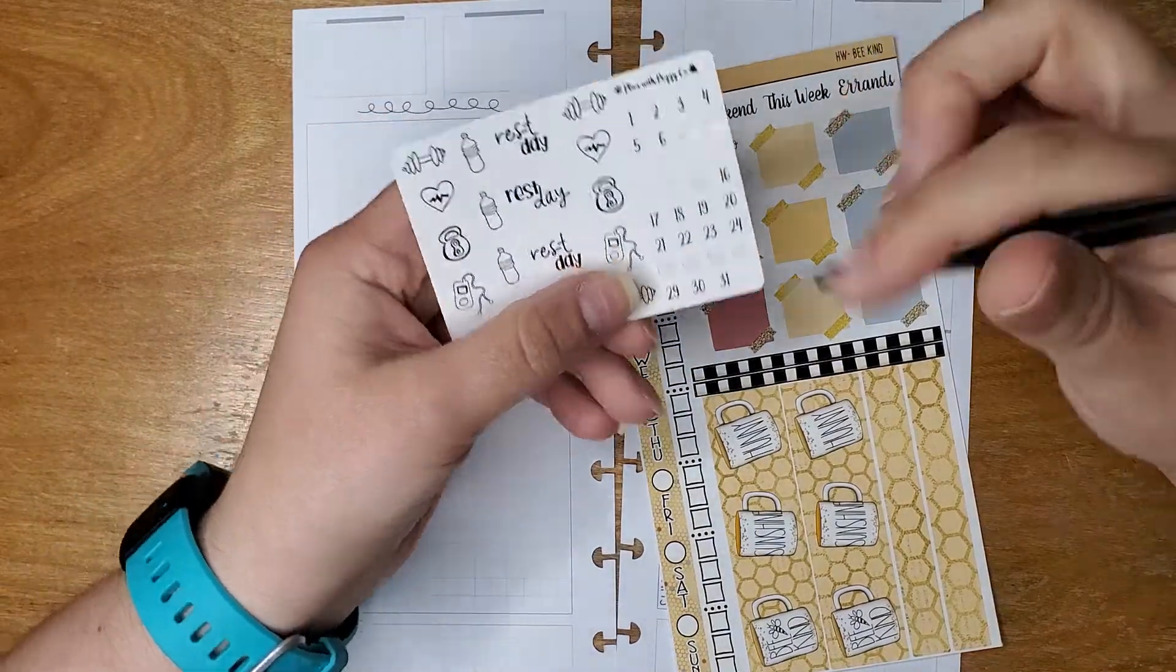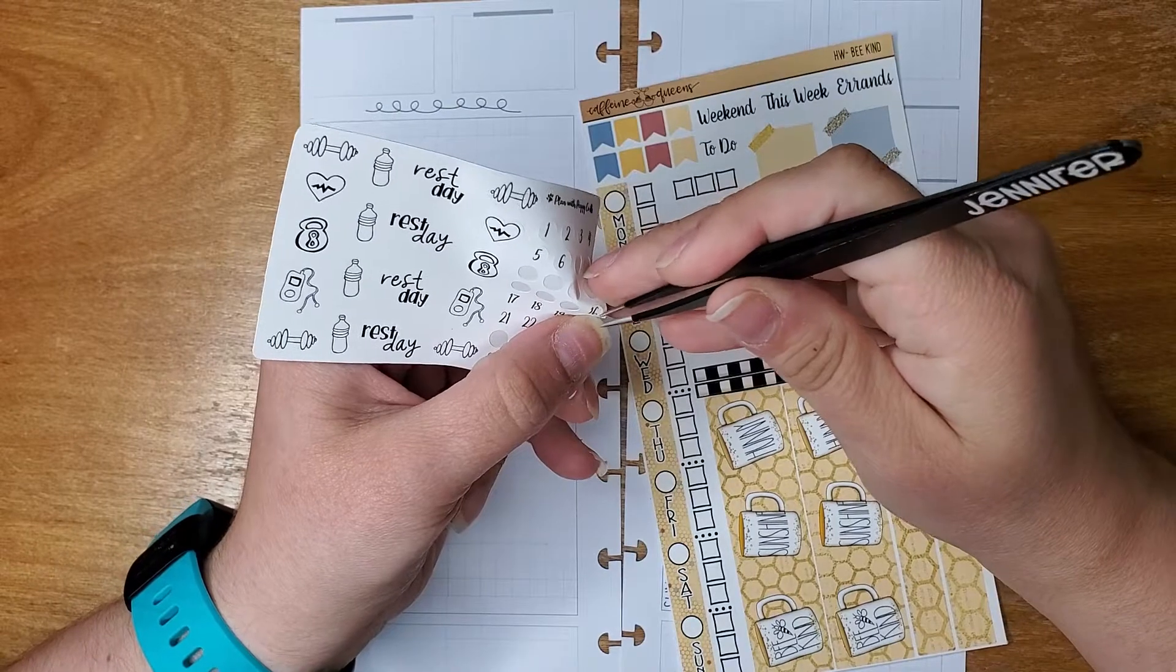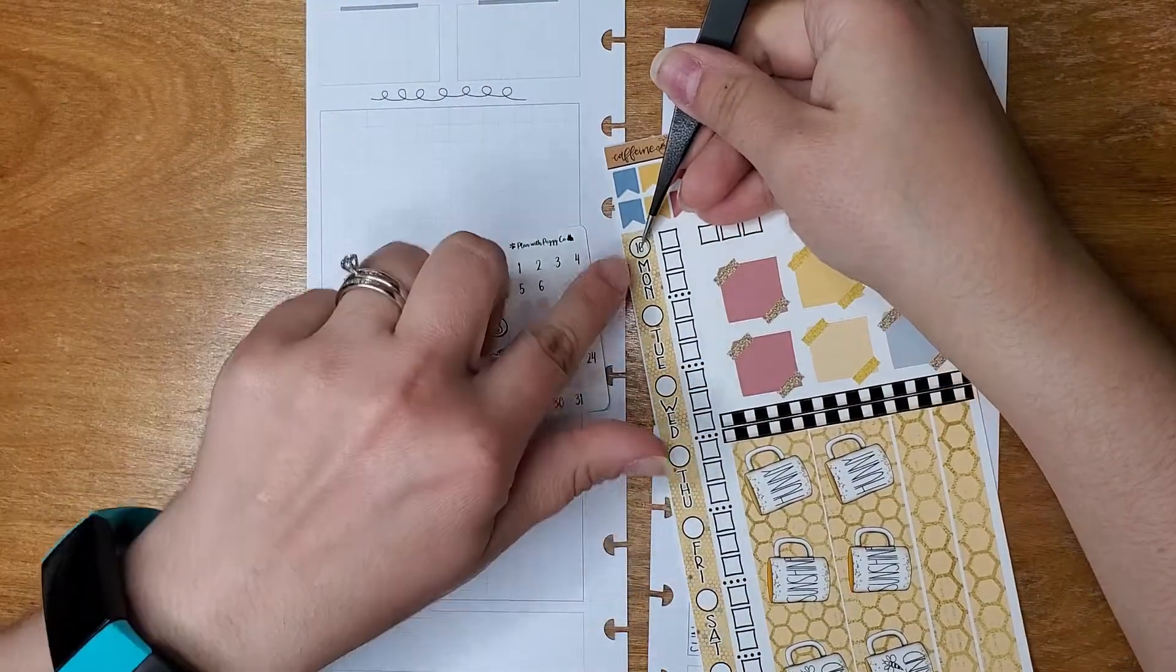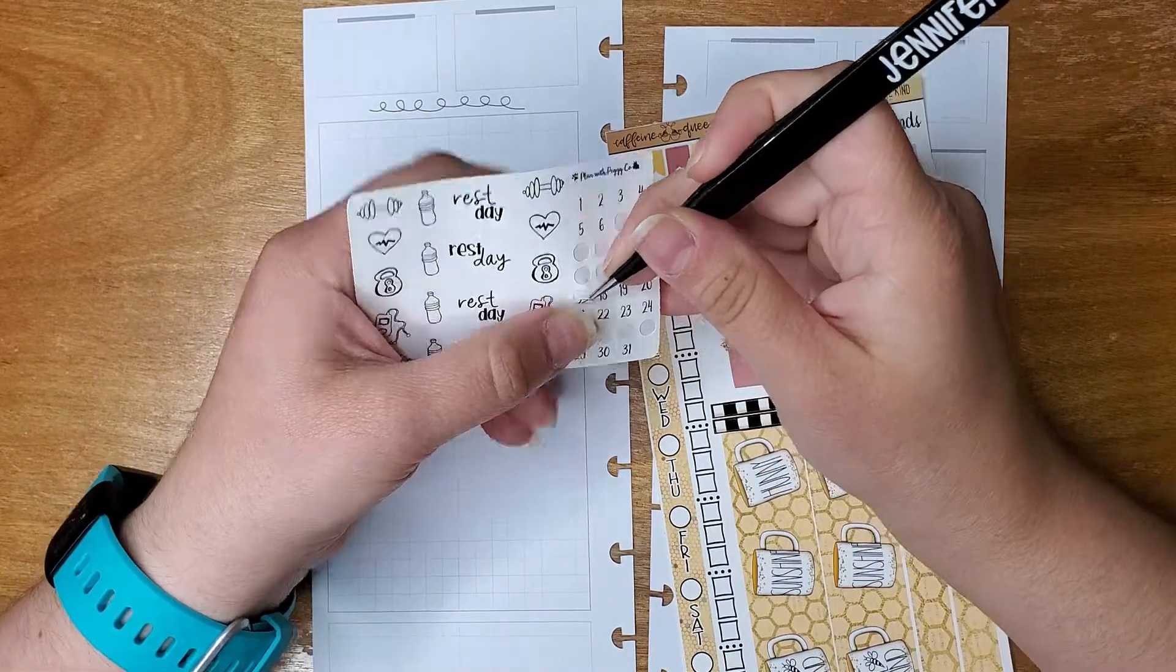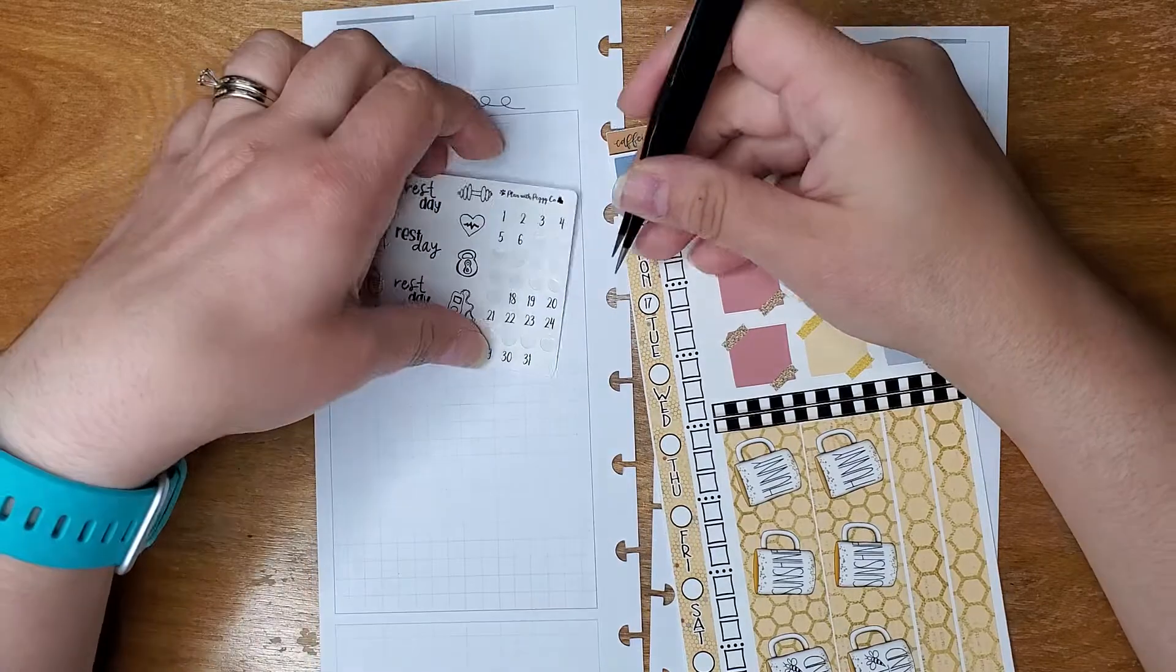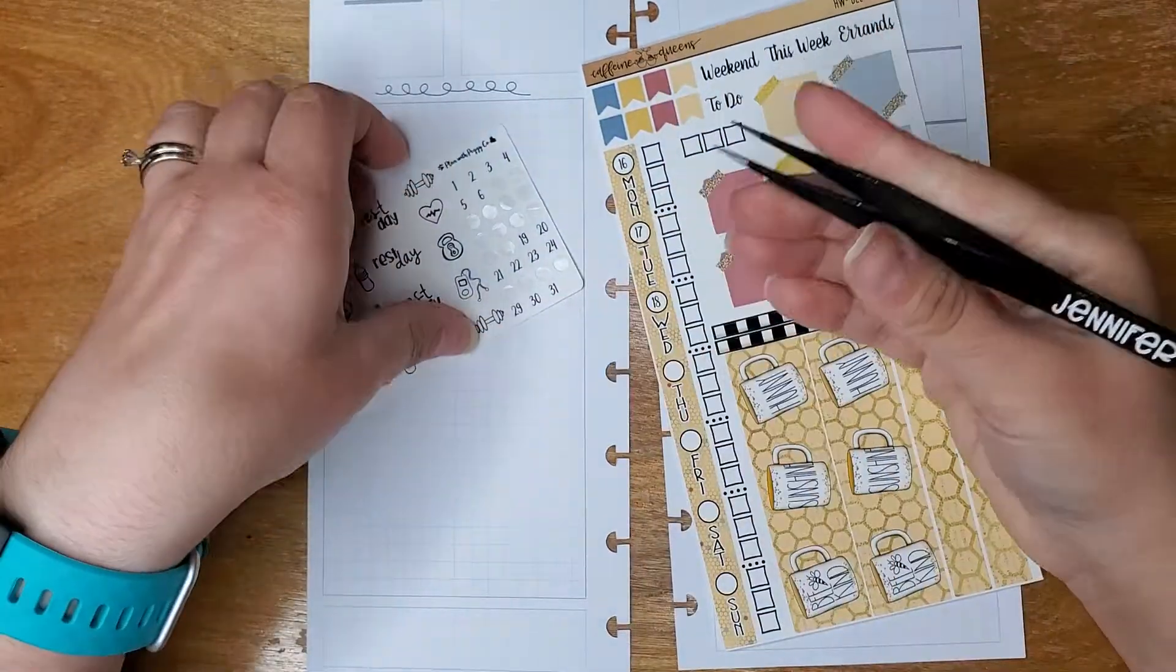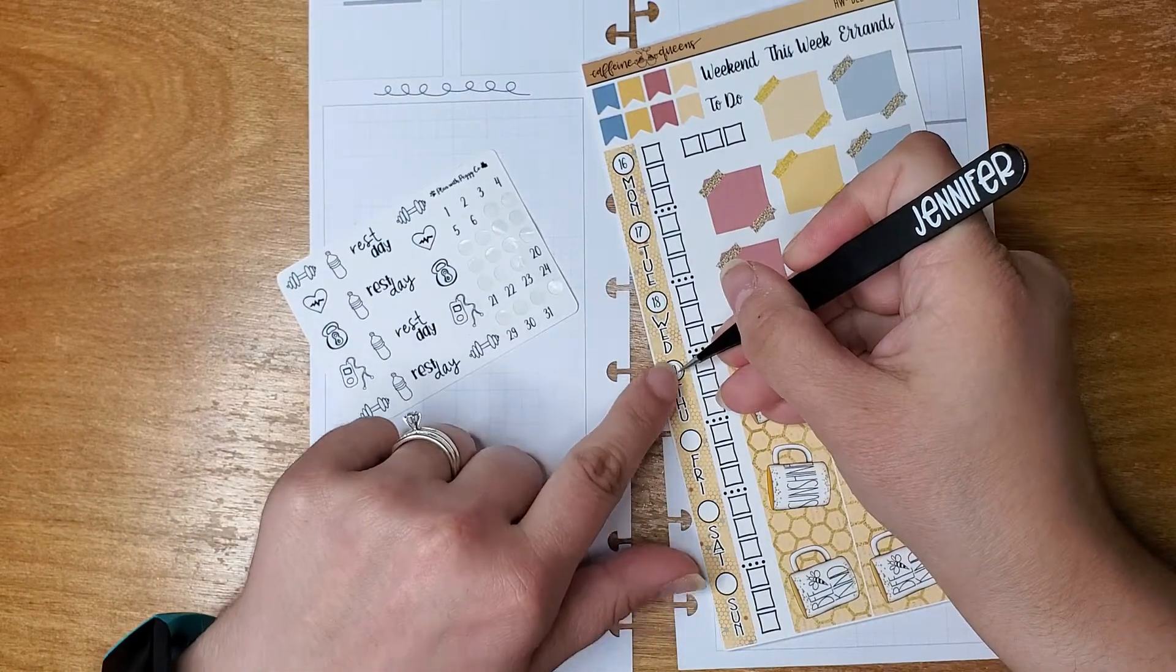Well, before I do that, let's do this. This is from Plan with Peggy Co. A lot of her kits you have the option for the weather option for the sheets with her hobo kits. I always opted to get the fitness one because I use this for that. So I'll probably pull some of those in this week.